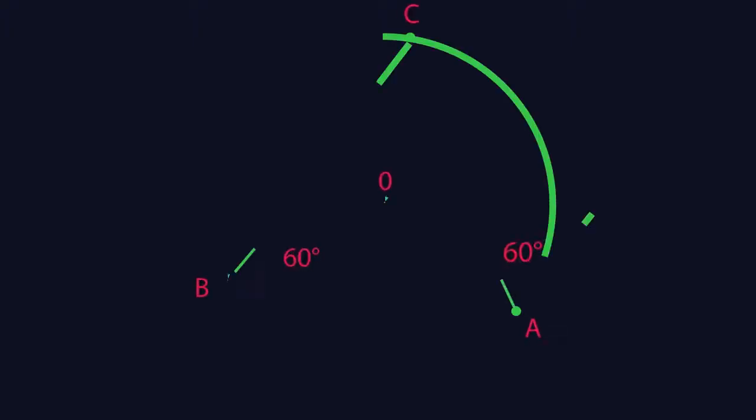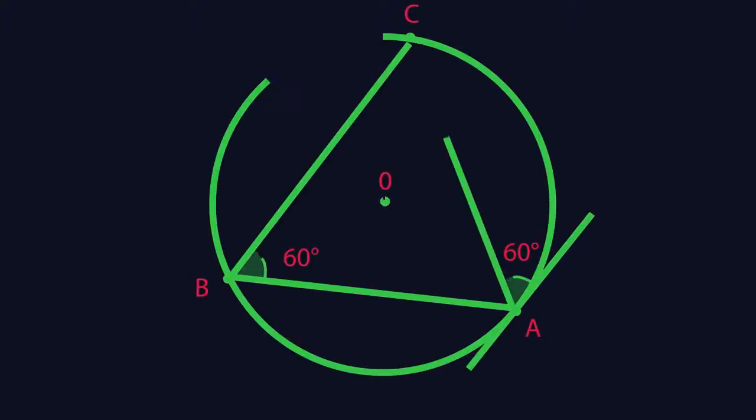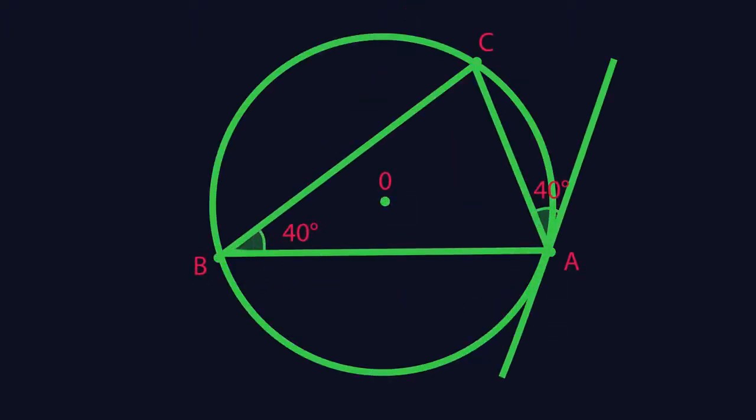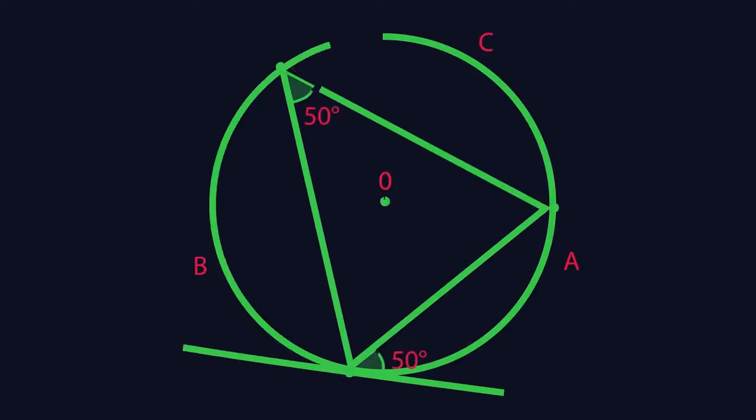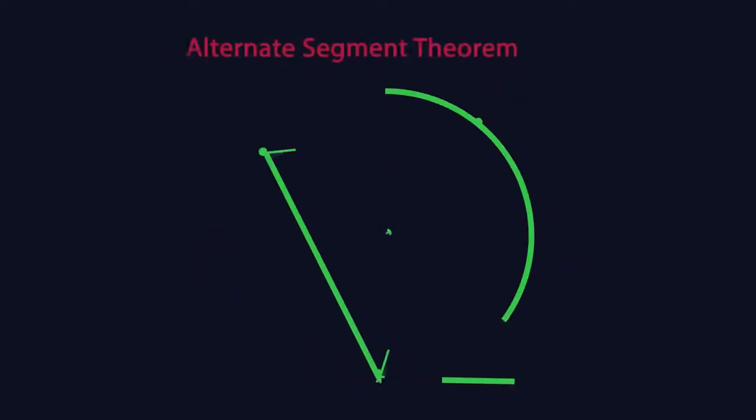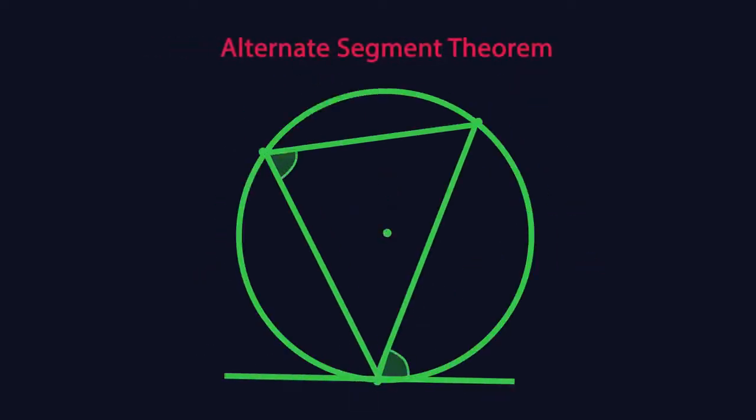Can you see what's happening with the angles? This theorem is known as the alternate segment theorem. The angle between a tangent and a chord is equal to the angle in the alternate segment. I've always just thought of it as the angle that's furthest away.